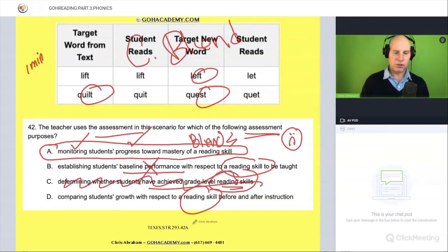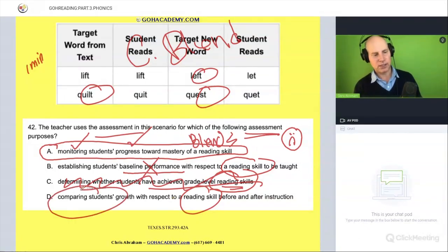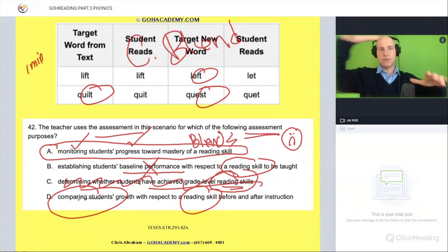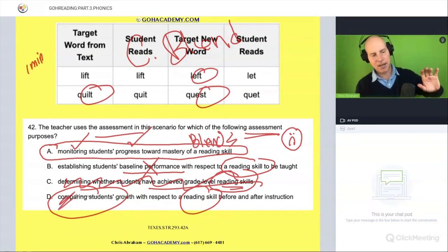Compare students' growth with respect to reading skills before and after instruction. Comparing students, you need a very special assessment for that to compare student to student. You want that to be more norm referenced. In this case, this is not a norm referenced assessment. We're not going to be using this to compare. Cross that out.